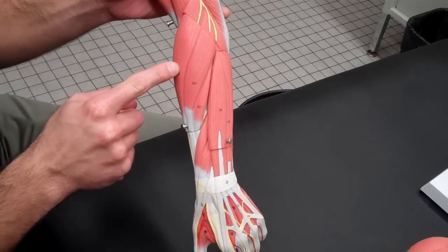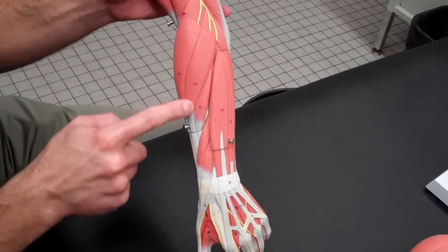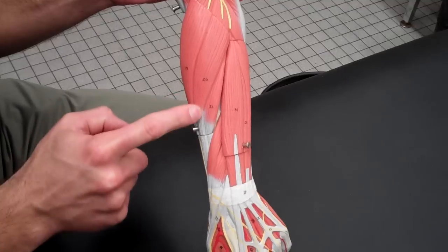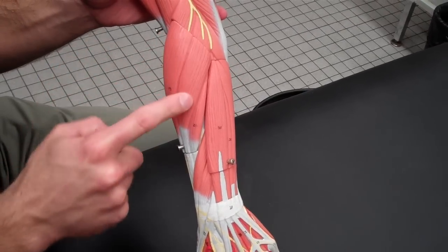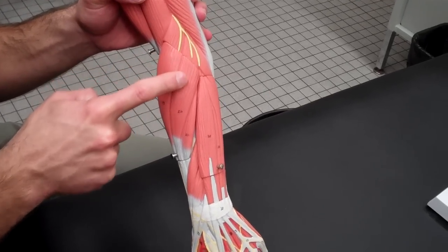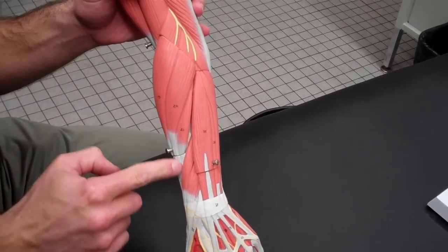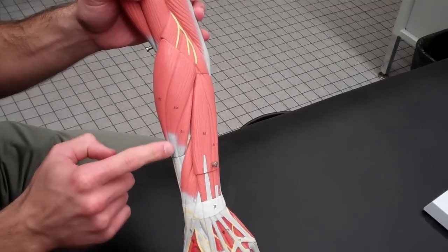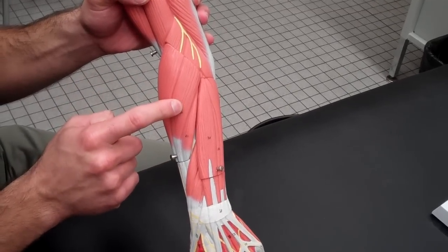As we track medially here onto this side, this next one right here is your extensor carpi radialis longus. It starts up here in your lateral epicondyle. It's on the radial side because it is the thumb side. It runs all the way down to your carpals. It's the longer of the two.